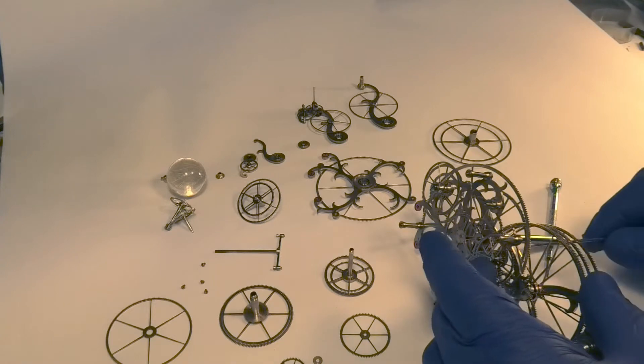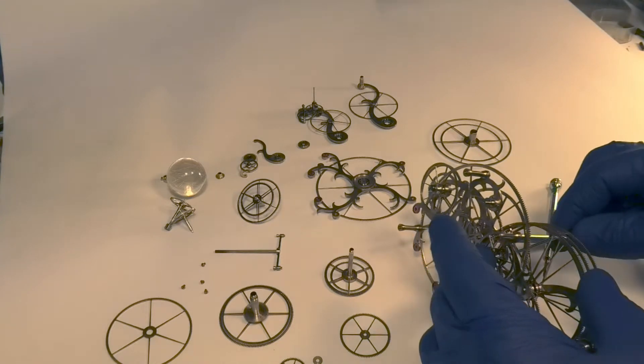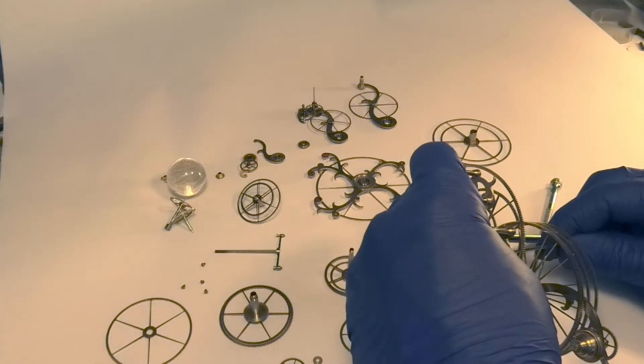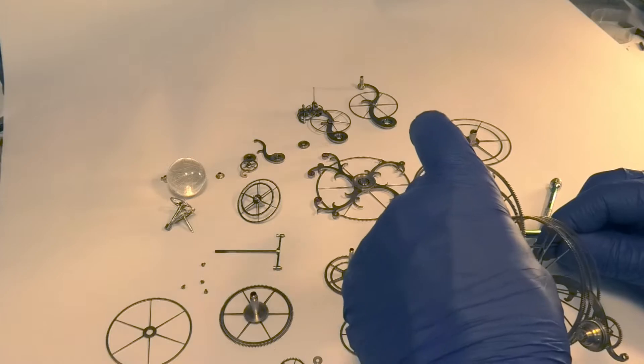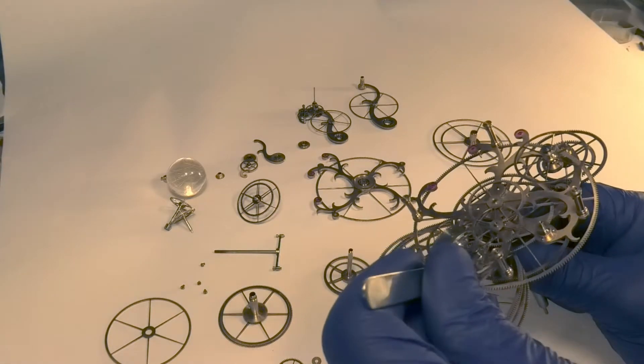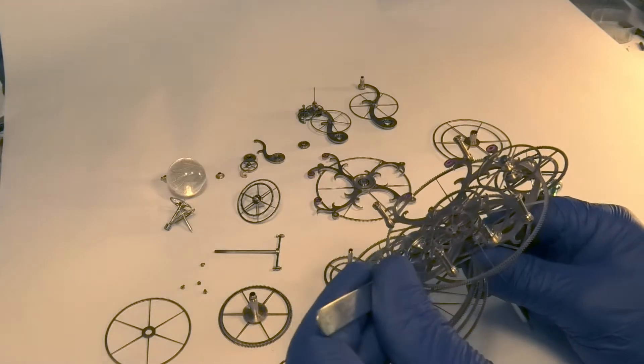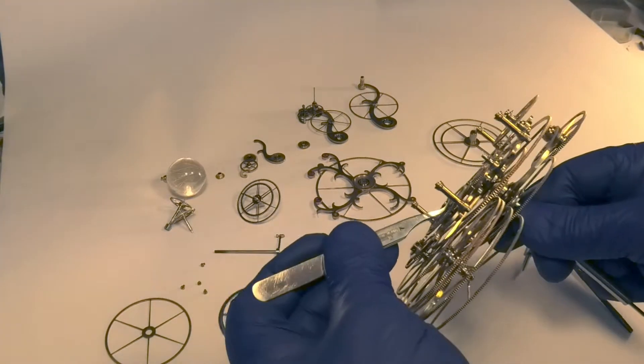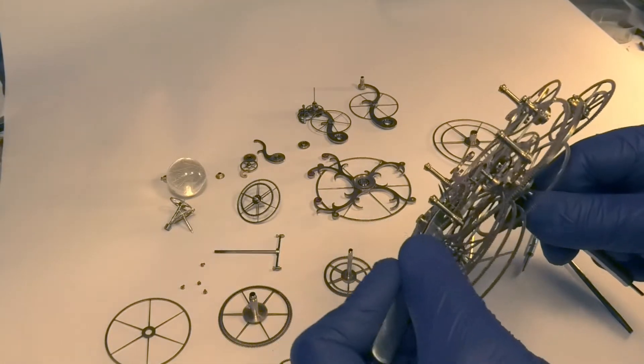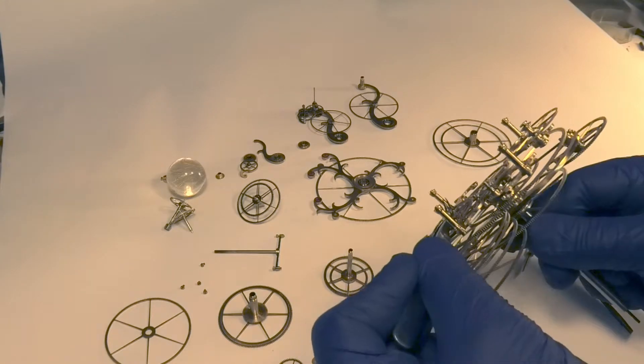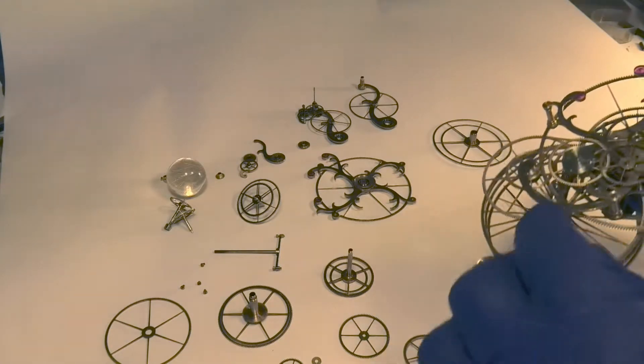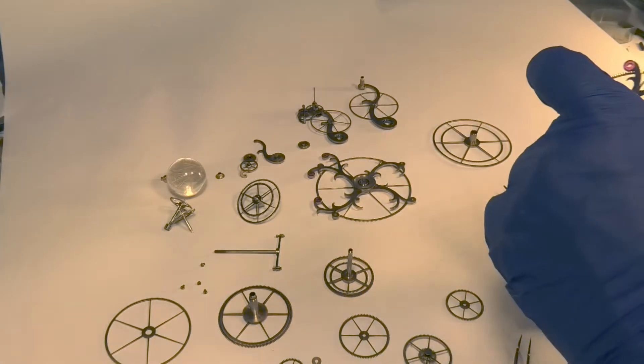So you can see we have the header screw starting to come away. And that is that removed, which means we can take off that wheel, which means that.